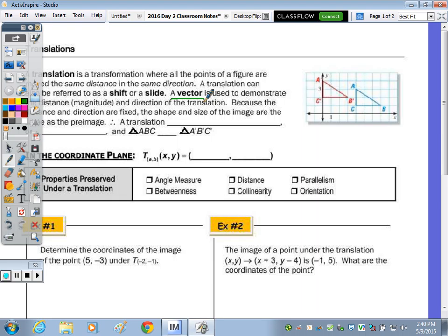To define the length of it, we can use Pythagorean theorem. Because your distance and direction are fixed, the shape and size of your image are the same as your pre-image. Therefore, it's a rigid motion. So a translation is a rigid motion or isometry.